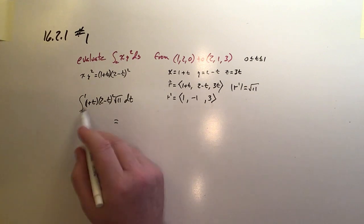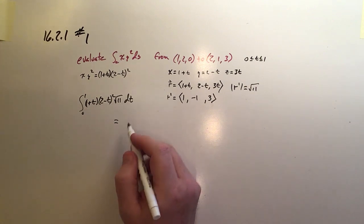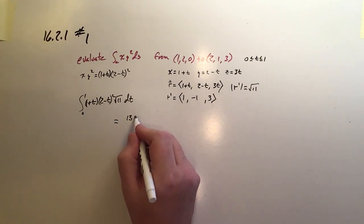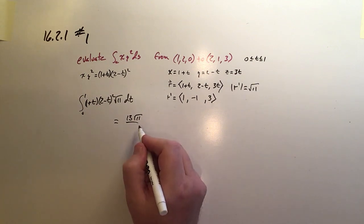And the answer, once you perform that integral, is 13 square root of 11 over 4.